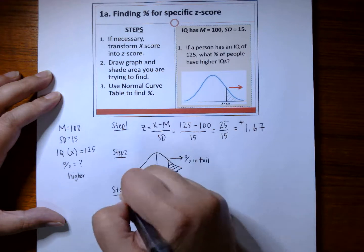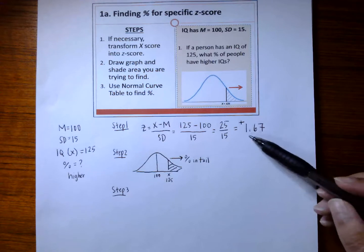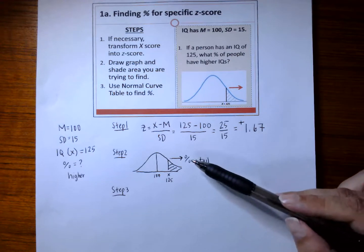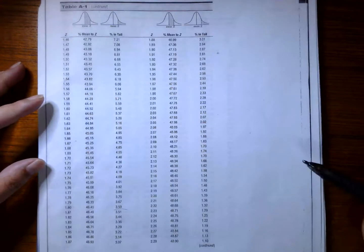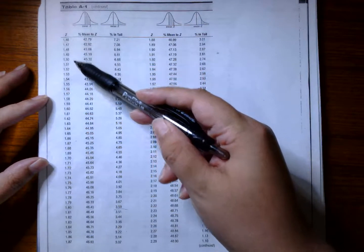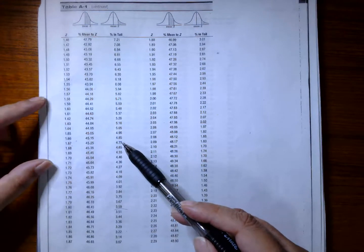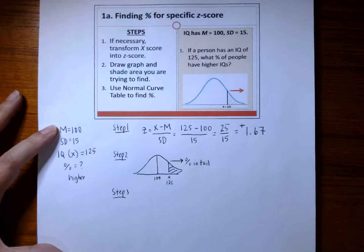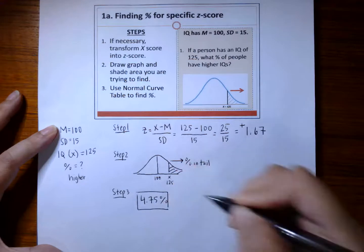Step 3 is to use your normal curve table to find the percentage. You will go to your normal curve table, look in the z column and find 1.67, and then scroll over to the column for percentage in tail. Here is a sample of your normal curve table. We go to the z-score column, scroll down to find 1.67, then go to the percent in tail column — in this case it's 4.75, which is your final answer. So 4.75% is your final answer for this problem.